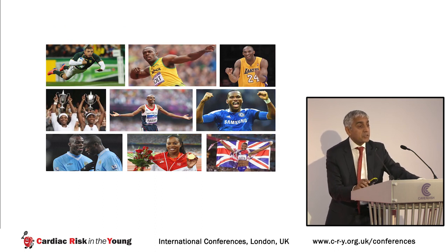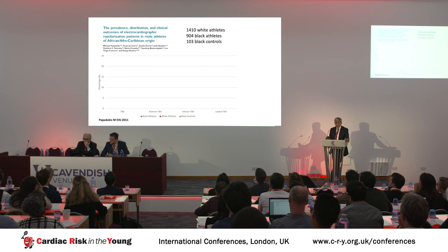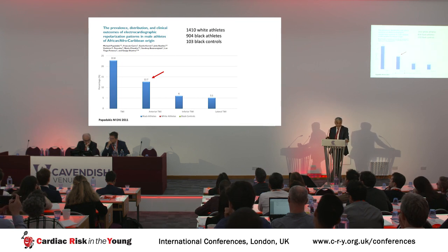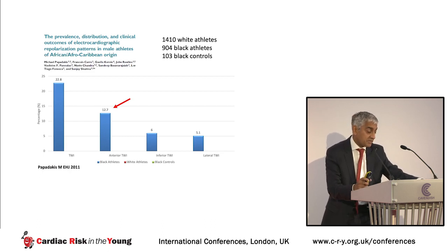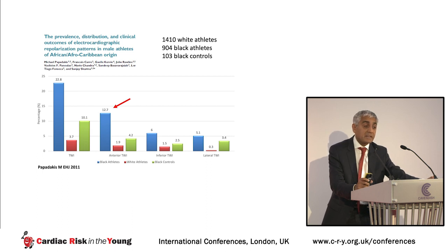Black athletes make up 20% of our Olympic team and one third of our Premier League, and these individuals have a high prevalence of repolarization anomalies including T wave inversion. Data from 1,400 white athletes, over 900 black athletes, and over 100 controls shows that around one in five black athletes has T wave inversion, with the commonest location being anterior leads V1 to V4. White athletes have a much lower prevalence, and black controls also have a lower prevalence than athletes, supporting that anterior T wave inversion in black athletes is a normal variant.